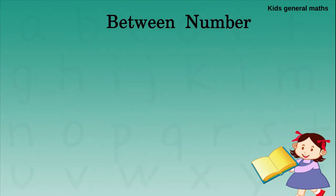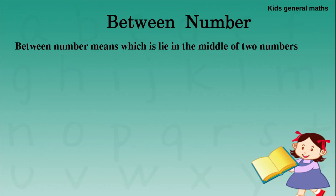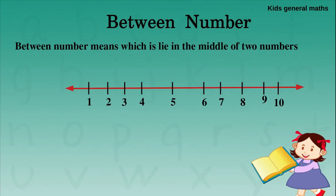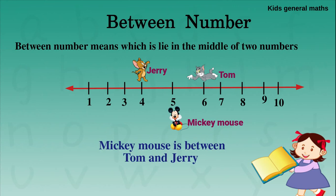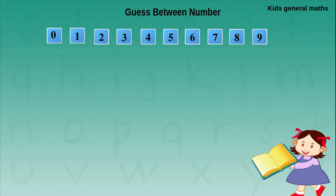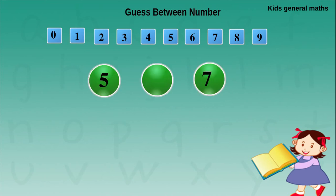Next we are going to find the between numbers. What is a between number? A number which is lying in the middle of 2 numbers. In the number line, Jerry is standing on number 4, Tom is standing on number 6, and Mickey Mouse is standing on number 5. So Mickey Mouse is between Tom and Jerry — that is, 5 is between 4 and 6. Now, they are given 5 and 7. After 5 is 6, so the middle number is 6. Between 5 and 7 is 6.